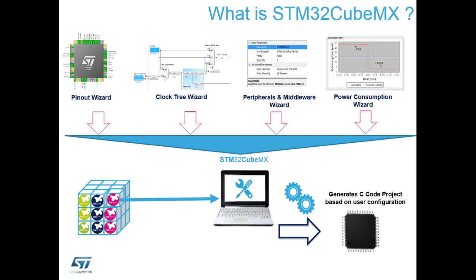Tab four is the Power Consumption Wizard — an extra benefit for those wanting to analyse current consumption, especially for battery-powered applications. You define a battery source and build up a power profile, specifying which peripherals are running in run mode, sleep mode, and stop mode, along with voltage and clock speed. There's even a window to add additional current consumption for peripheral components on your board. Once the profile is built up, it gives you an average current consumption and expected battery lifetime.